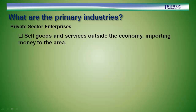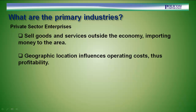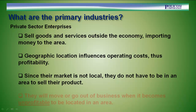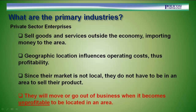The private sector enterprises which are primary in nature sell their goods or services outside the economy, importing money to the area. The geographic location — the community in which they are located — influences operating costs, and thus profitability. Since their market is not local, they do not have to be in an area to sell their product and generate revenues for the company. As a result, they will move or go out of business when it becomes unprofitable to be located in an area. This is the most important characteristic of primary companies.